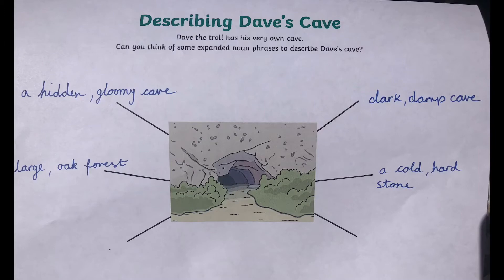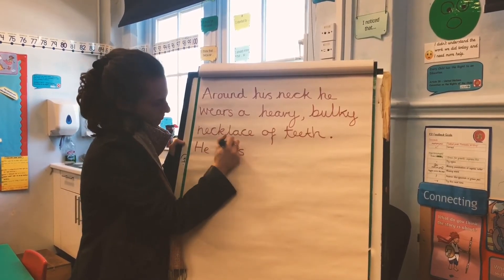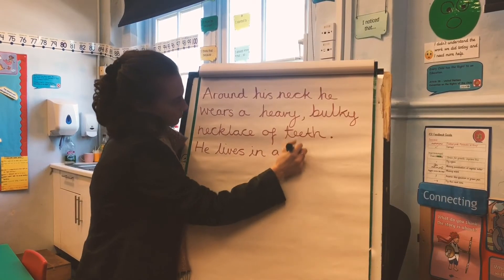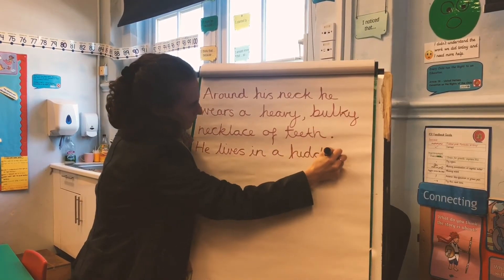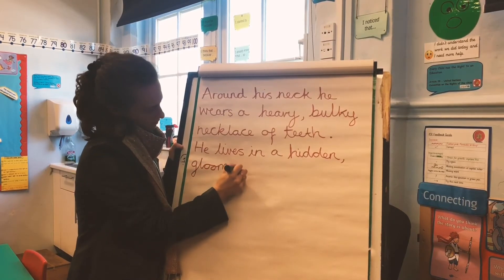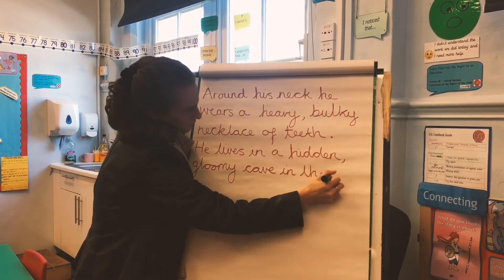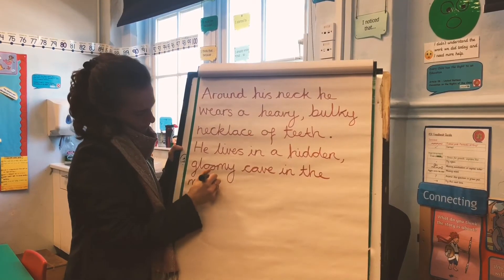Now I'm going to move on to describing Dave's cave — the setting. I'm going to start with 'a hidden, gloomy cave' as my chosen expanded noun phrase. He lives in a hidden, gloomy cave.